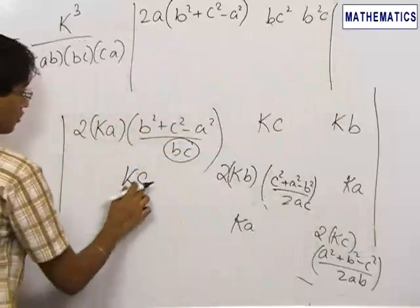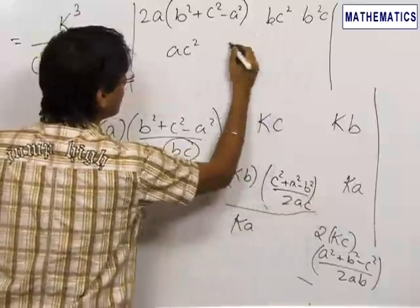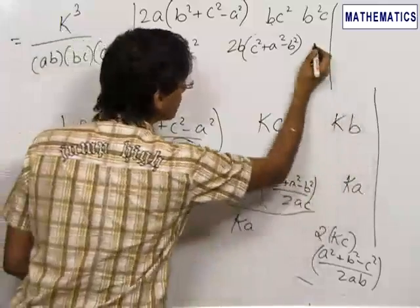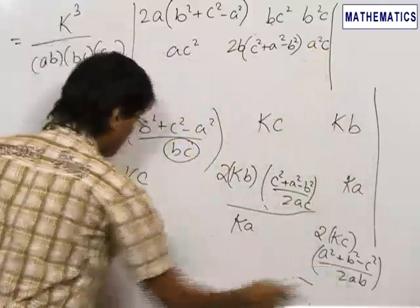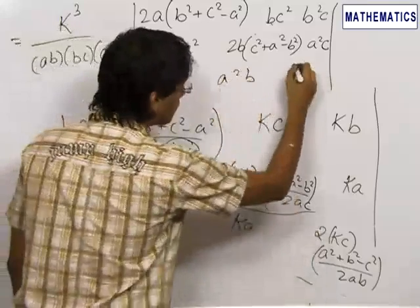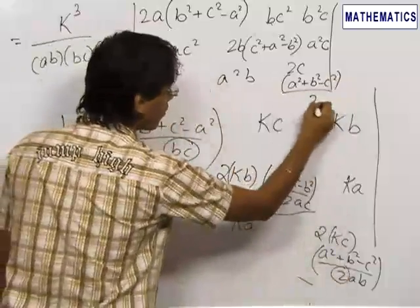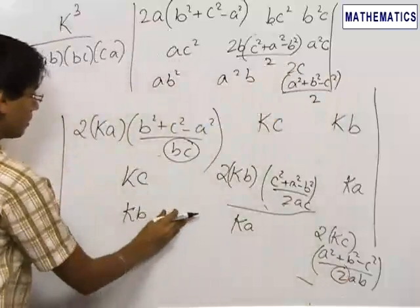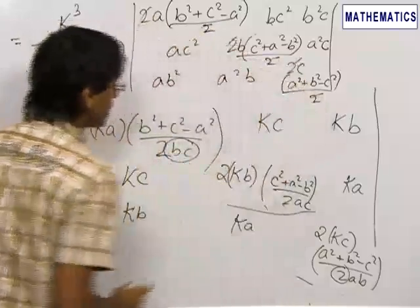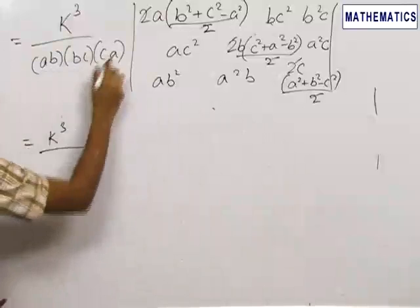We multiplied the second row by AC and the third row by AB. The third row becomes: AB², A²B, 2C(A² + B² − C²). The factors of 2 from the diagonal entries and from the row operations cancel out. We can rewrite the determinant as k³ / (ABC)².